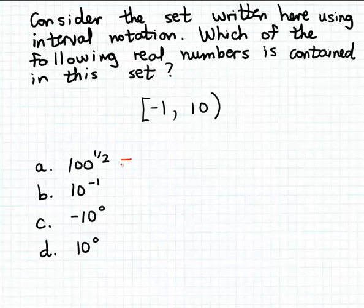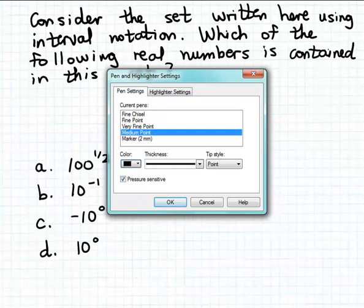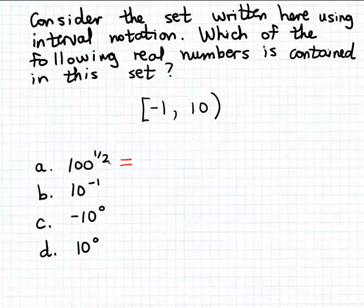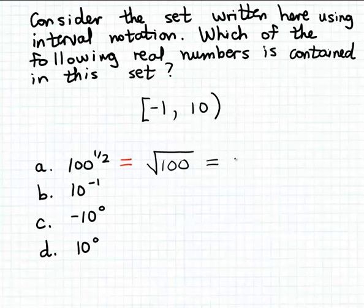You're going to have to simplify 100 raised to the one-half power to determine if that number is contained in the set. Recall the one-half power means a square root, so 100 to the one-half power is just the square root of 100. Since 100 is a perfect square, this simplifies to 10. So part A is really asking: is 10 contained in this interval set? Now 10 is a boundary value, but the open parenthesis tells us 10 itself is not contained in the set.